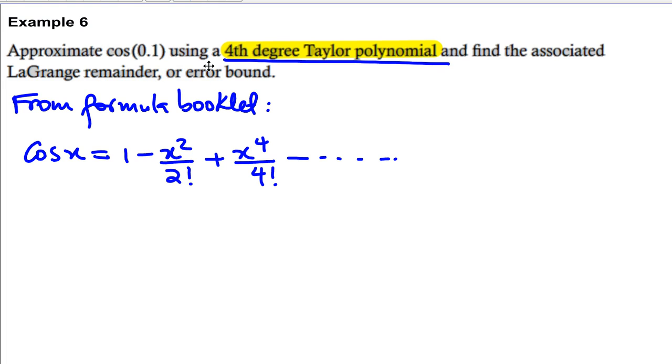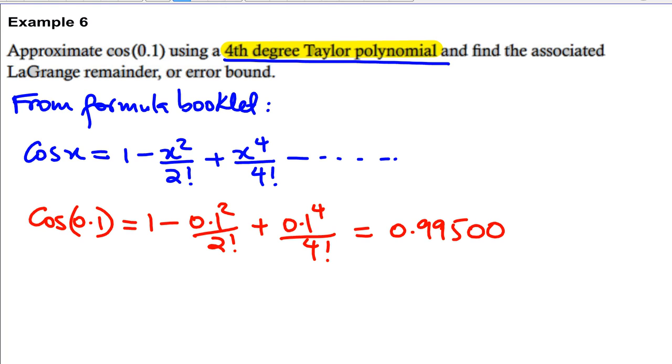So cos 0.1 will be 1 minus 0.1 squared over 2 factorial plus 0.1 to power 4 over 4 factorial. And that will be equal to 0.9950041667.